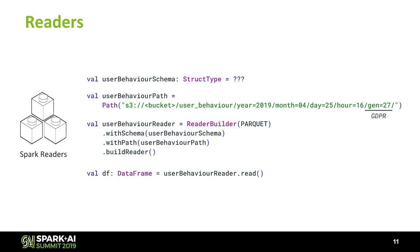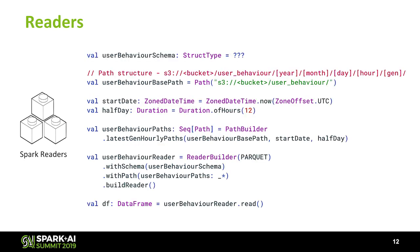Here we have the user behavior schema. We have some paths to S3 — the bucket, user behavior, and all the partitions: year, month, day, hour, whatever. Then we have a reader builder that is reading Parquet data with this schema and this path, and then we're just building the reader and reading a data frame. What if instead of knowing all the partitions, we start providing a duration and a zone date time? I want to read from now to 12 hours ago — then I just have a path builder with the base path and all other things, and I can read multiple paths with just one line.